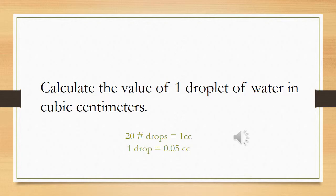The first step is to determine how many drops it takes to get one milliliter. We recorded the number of drops from the dropper it took to produce 1 cubic centimeter, which is equal to 1 milliliter of water, and the amount of water per drop. That was 20 drops equals 1 cubic centimeter, and 1 drop was equal to 0.05 cubic centimeters.